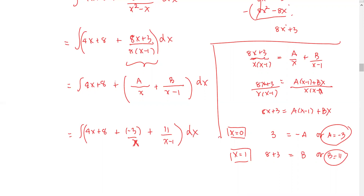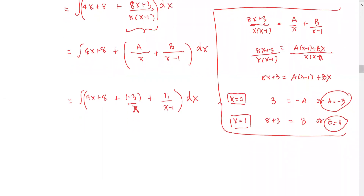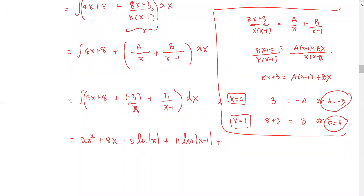Now we find the antiderivative of each term. The first term gives 2x squared, the second term gives 8x, the third term gives negative 3 times natural log of the absolute value of x, and the last term gives 11 times natural log of |x minus 1|, plus the constant of integration C.